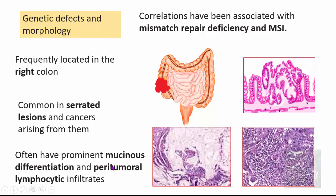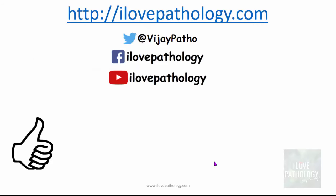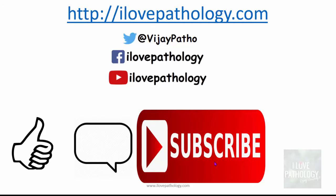These tumors also have prominent mucinous differentiation where you find pools of mucin and very prominent peritumoral lymphocytic infiltrate. That's all about the pathogenesis of colorectal carcinoma — we looked into epidemiology, risk factors, and the concepts of pathogenesis. If you've liked this video, hit the like button, do comment if you have any queries, and mention difficult topics you want explained. Don't forget to subscribe and share if you find this video useful. Thank you.